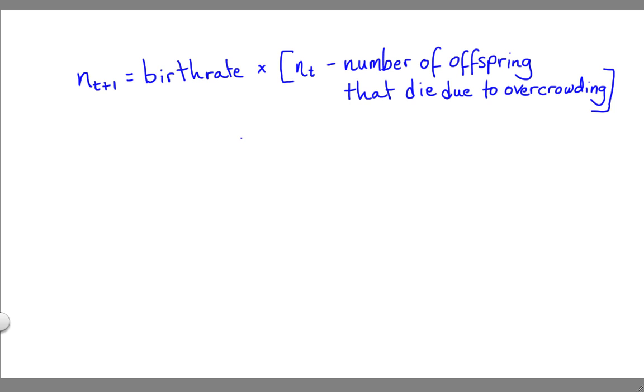We're going to assume that overcrowding occurs due to limits on food or space, and that there's some maximum population that can live in this particular habitat. So, we're going to define the number who die due to overcrowding as equal to n sub t squared, the square of the number in the current population, divided by this maximum possible population.